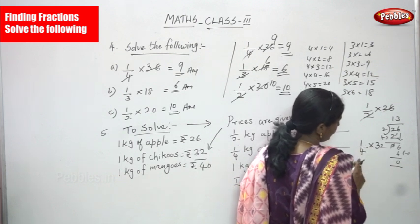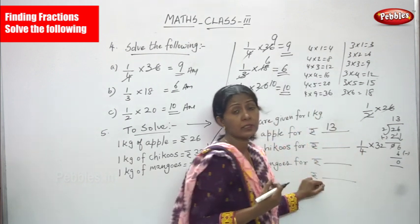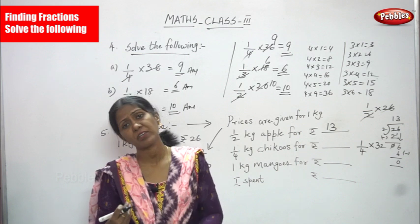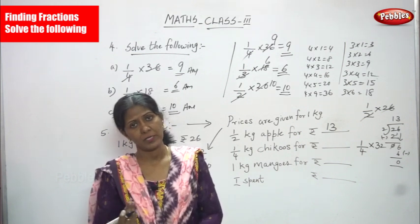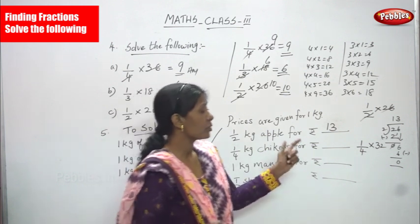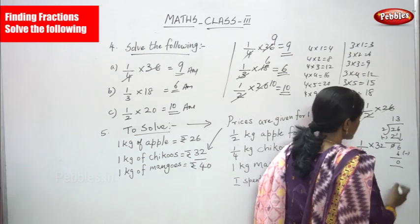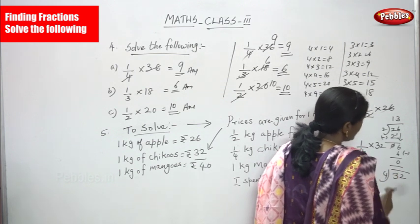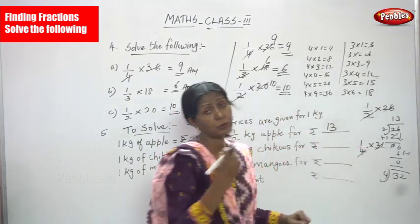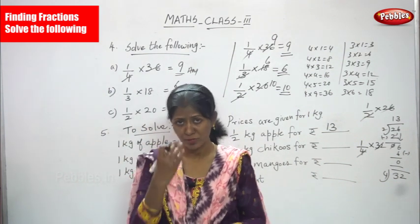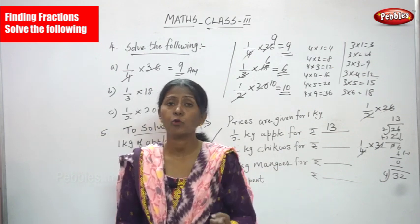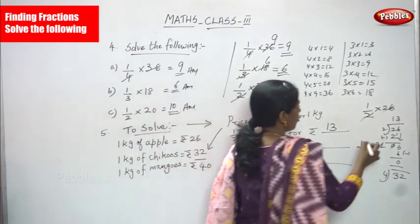1 kg of chikus costs rupees 32. We are finding 1/4 of 32. Using the fourth table: 4 1's are 4, 4 2's are 8, 4 3's are 12, 4 4's are 16, 4 5's are 20, 4 6's are 24, 4 7's are 28, and 4 8's are 32. So rupees 8 is the right answer.